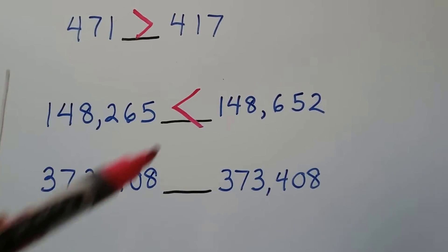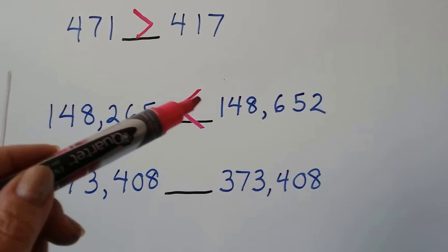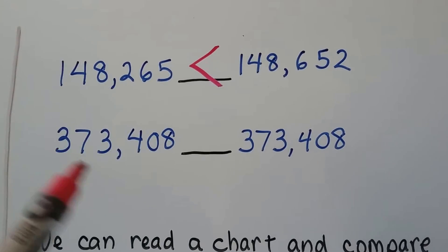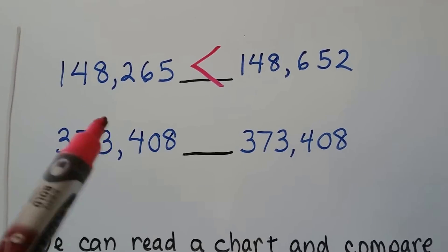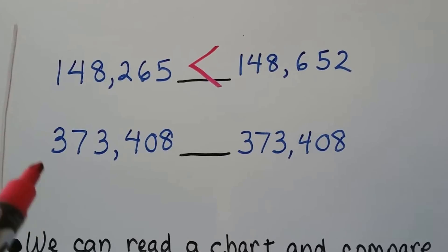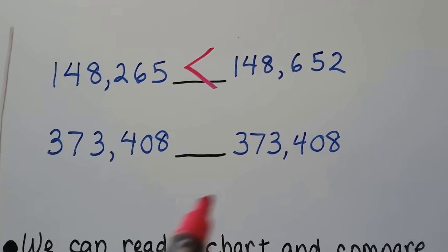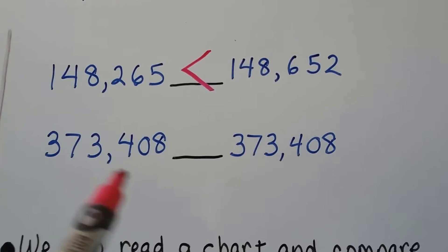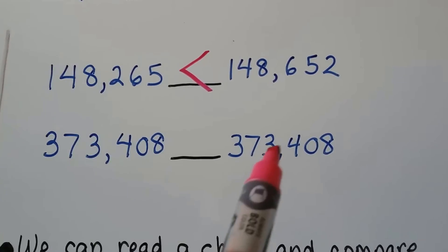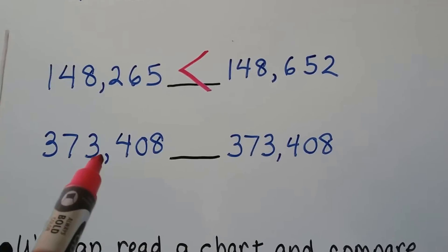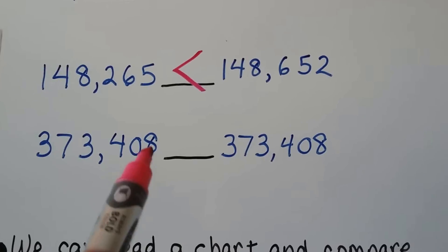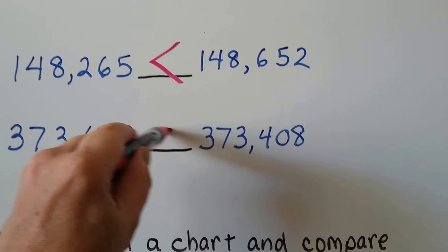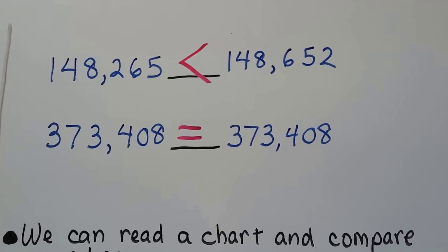Just remember the big mouth faces the big number. Now with these two numbers, comparing the hundred-thousands place they both have a 3, the ten-thousands place they both have a 7, the one-thousands place they both have a 3, and they both have 408. So they're equal to each other.